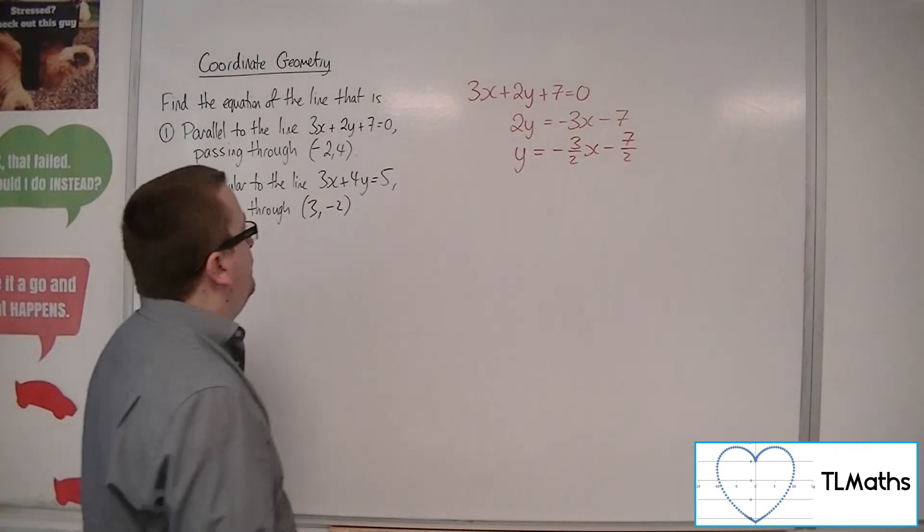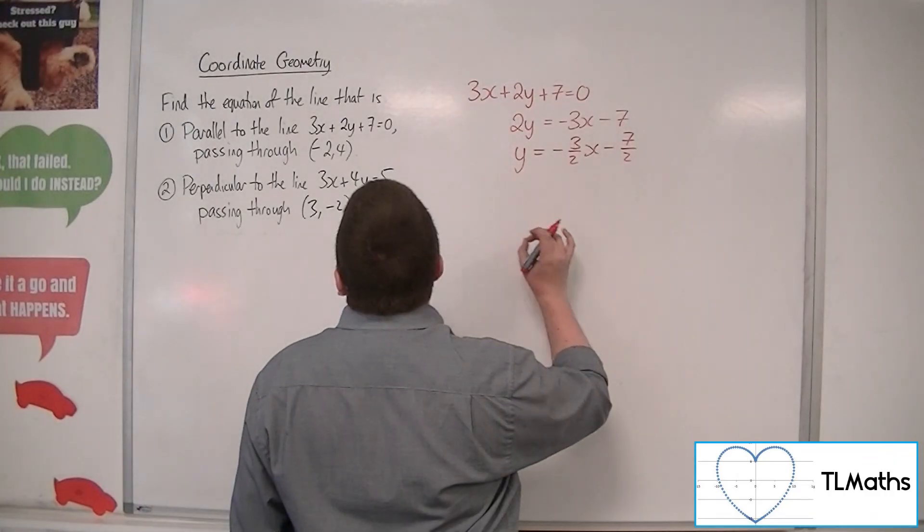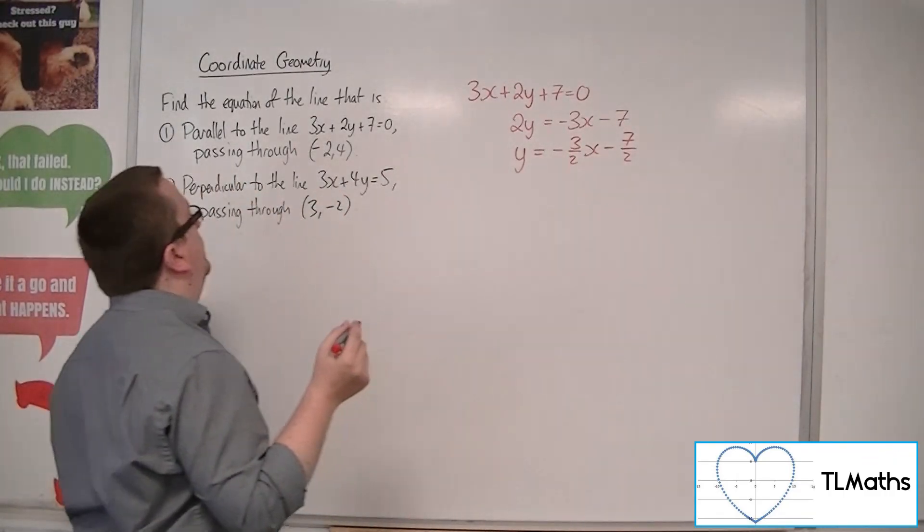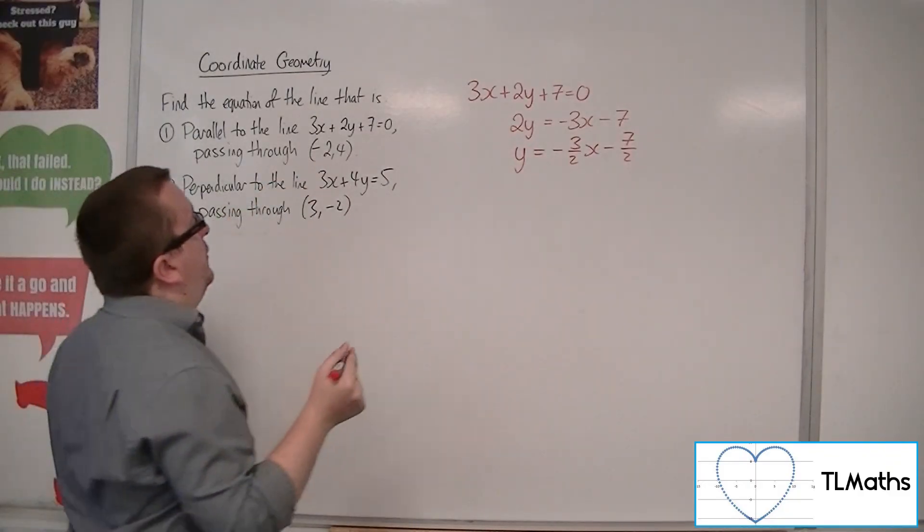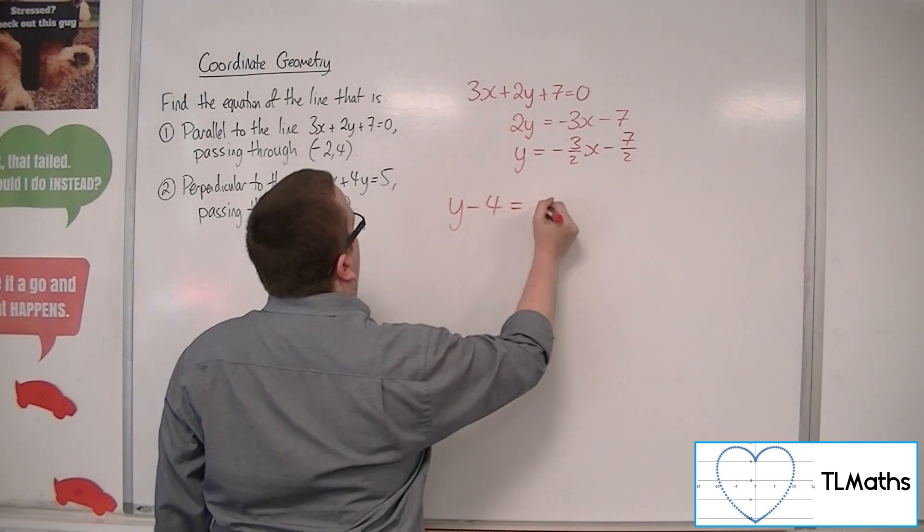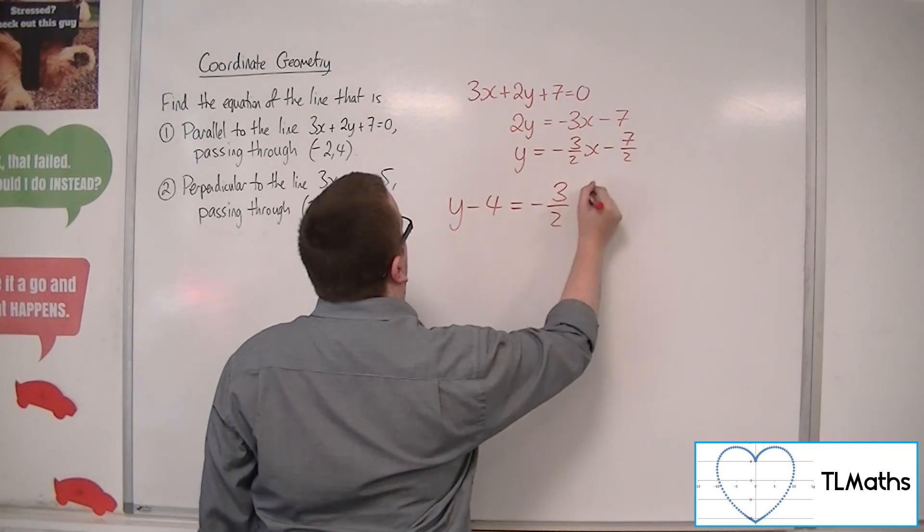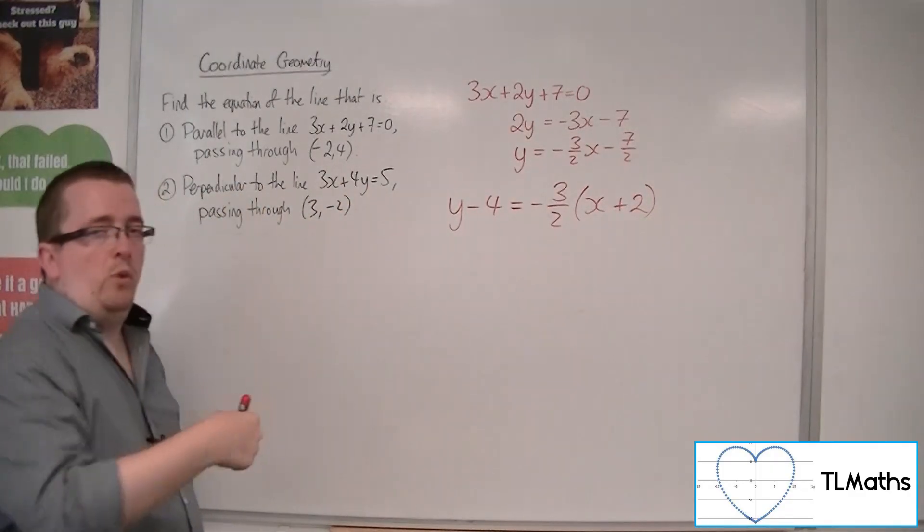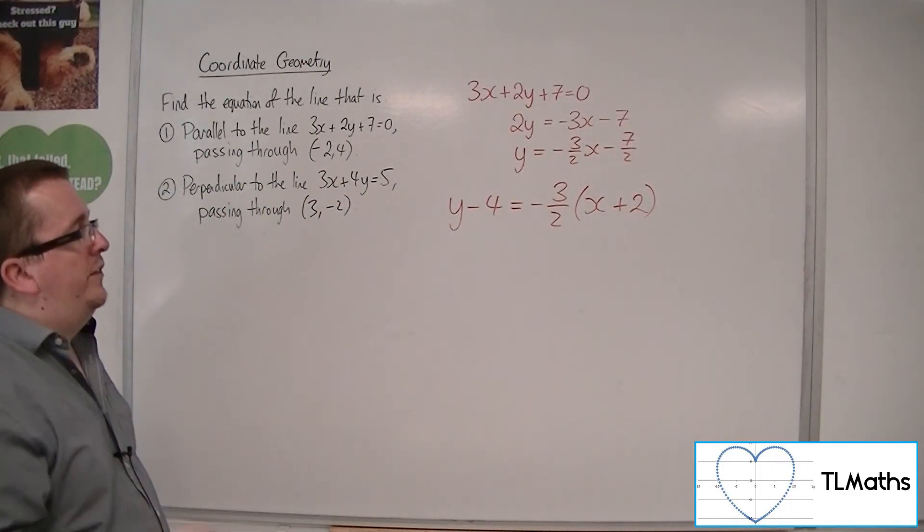Because I know that the line that I need is parallel to this one, and so has the gradient of minus 3 halves. But it's going through minus 2, 4. So I can then say, well, y minus 4 is equal to minus 3 halves x plus 2, using the y minus y1 equals m x minus x1 formula.